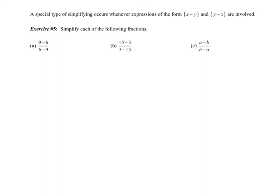A special type of simplifying occurs whenever expressions are in the form of x minus y and y minus x are involved. So exercise 5. Simplify each of the following fractions. All right. Well, on top, I have 9 minus 6, which is 3. And on the bottom, 6 minus 9, which is negative 3.